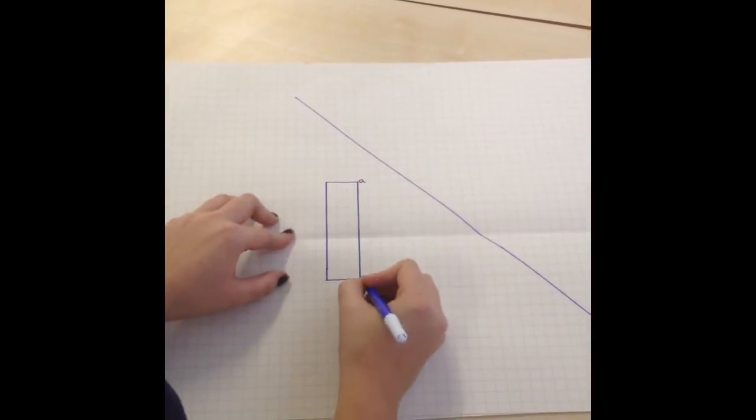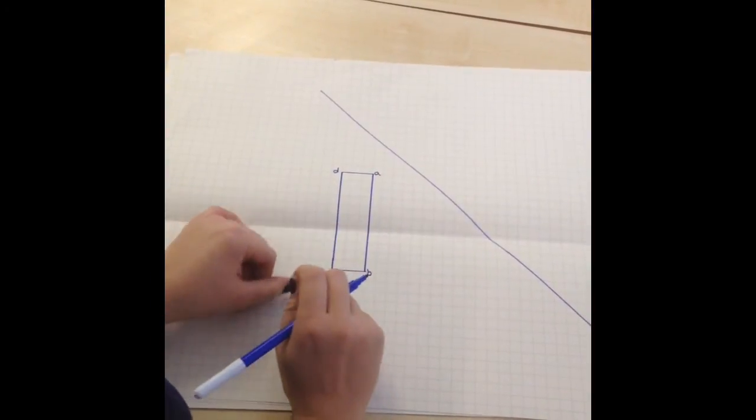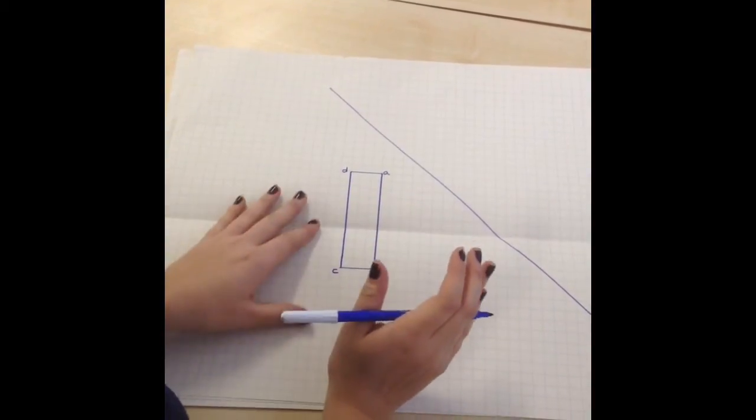The first thing I'm going to do with my rectangle is label my vertices. So I'm going to have A, B, C and D. Now the way we reflect over a diagonal mirror line there are two different ways depending on which way you prefer.